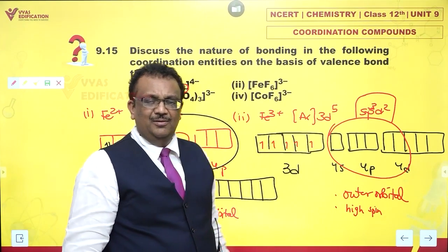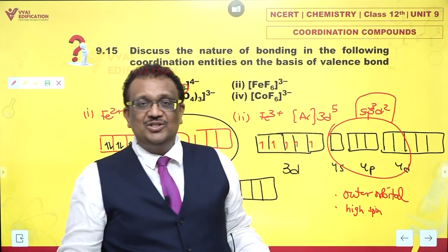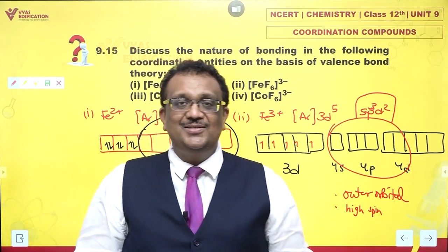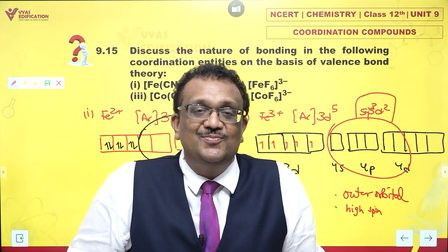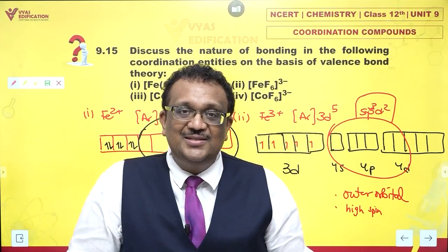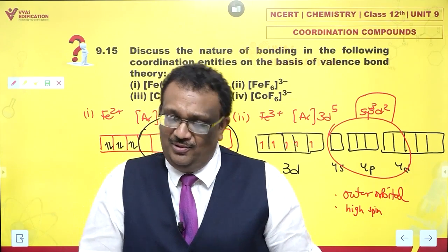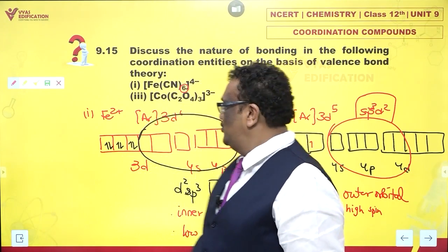Because there is pairing in Fe(CN)6⁴⁻, it is called a low spin complex. Because there is no pairing in FeF6³⁻, it is called a high spin complex. That completes the valence bond theory description of these two complexes. Now let's take a look at the other two.